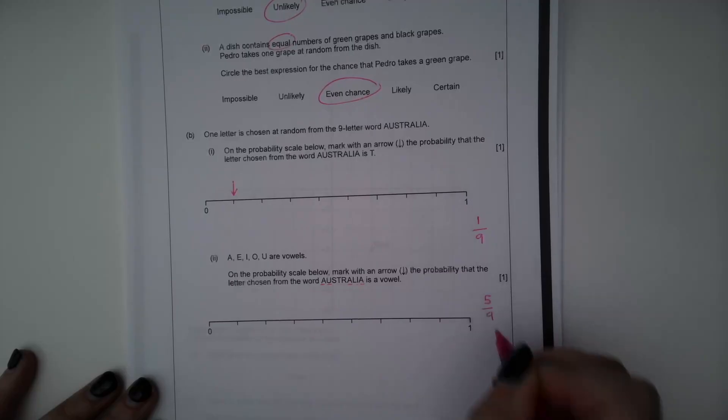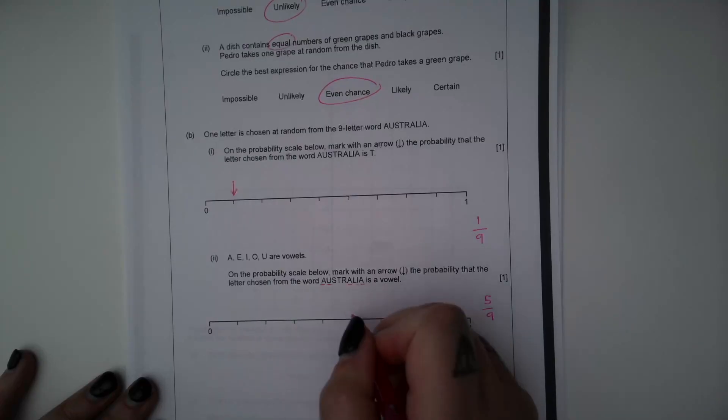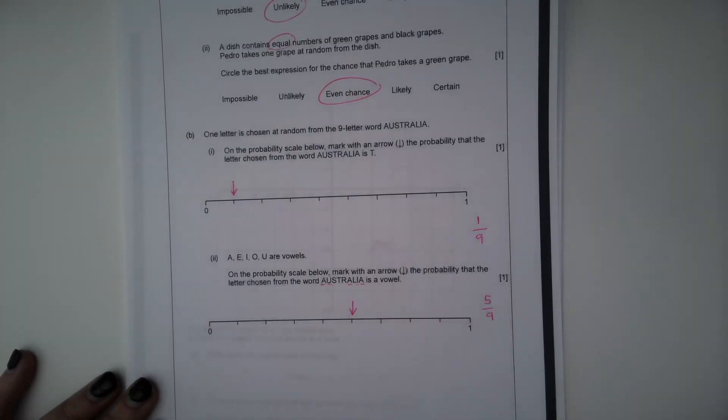So five out of nine letters are vowels. Remember each of these is one-ninth. So one, two, three, four, five. We're marking our arrow there.